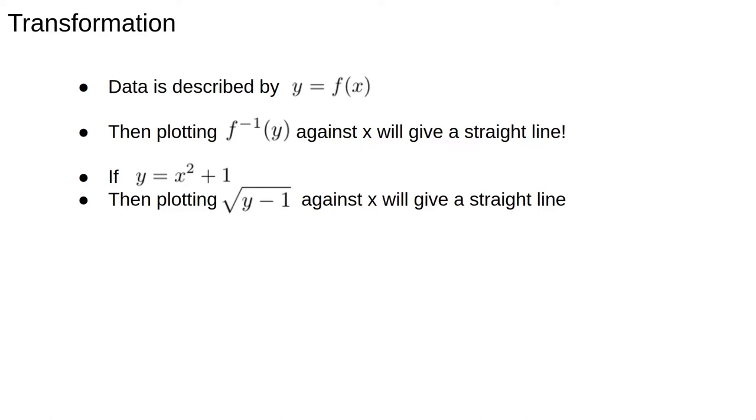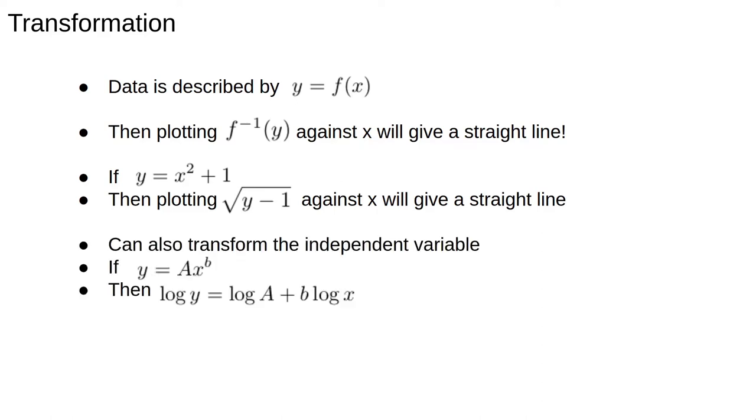Pause, go get a piece of paper and make sure this makes sense. In other scenarios it might be necessary to transform the independent variable or both variables. For example, if the data is described by a power law y equals a times x to the power of b, then taking logs of both sides gives log y equals a times log x plus c, so that plotting the logarithm of y against the logarithm of x yields a straight line.